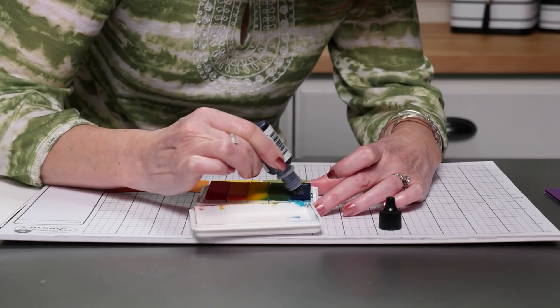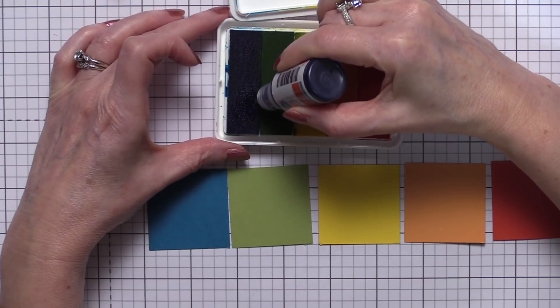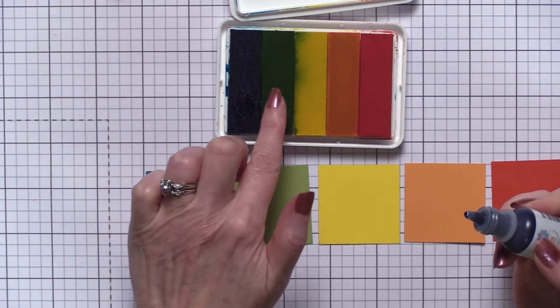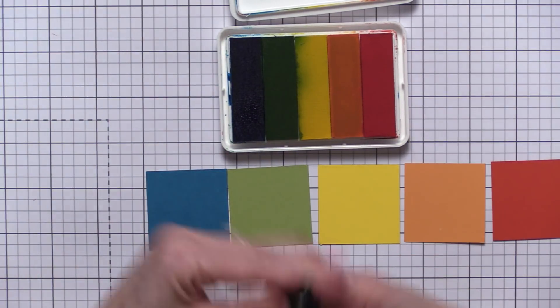And you're going to add the color to the strips just like you would when you're re-inking a pad that already has color. So you're going to come up to the edge, but be really careful when you're at the edge not to get the color into the next strip.